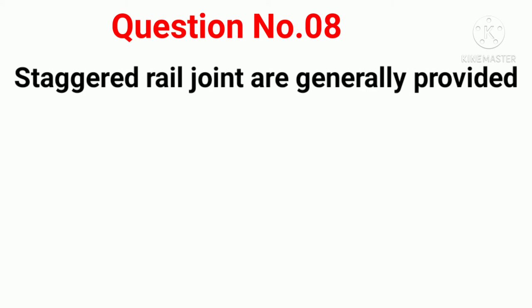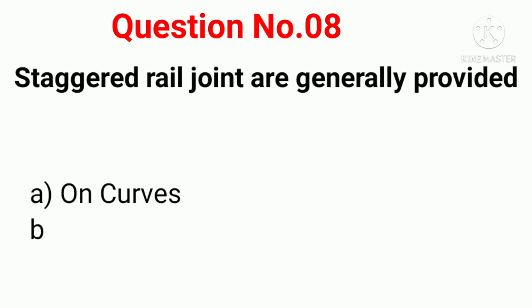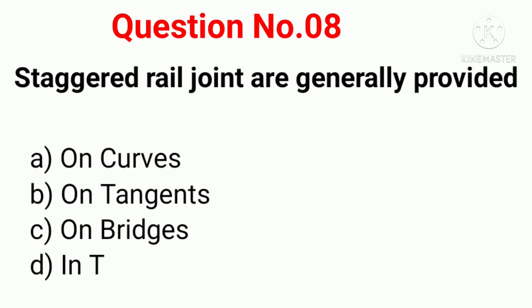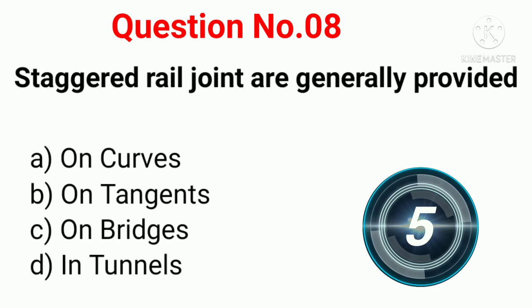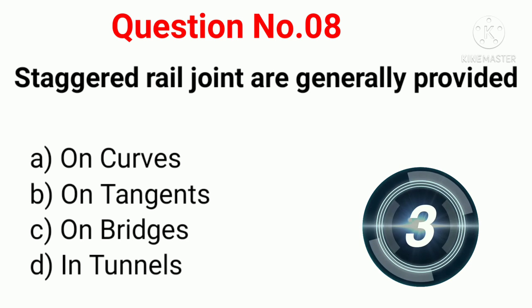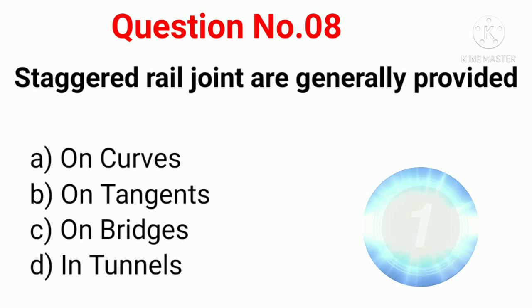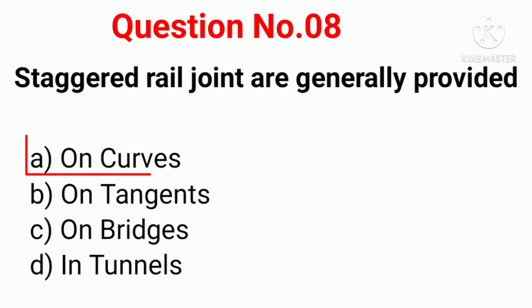Q8. Staggered rail joints are generally provided: Option A: On curves. Option B: On tangent. Option C: On bridges. Option D: In tunnels. Correct answer: Option A, On curves.